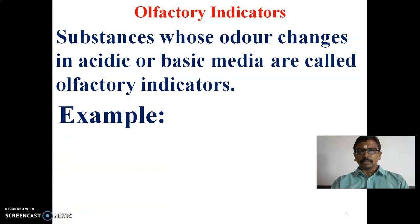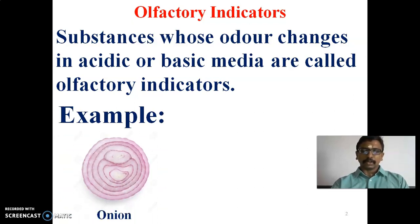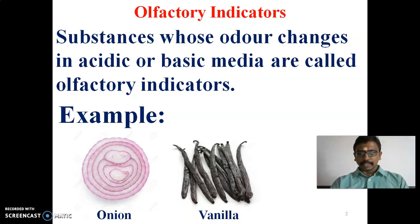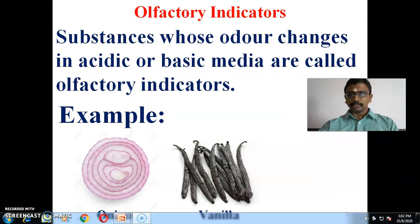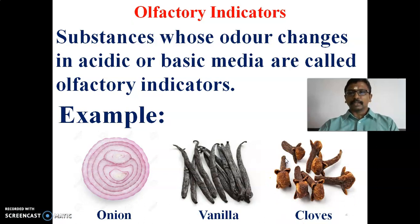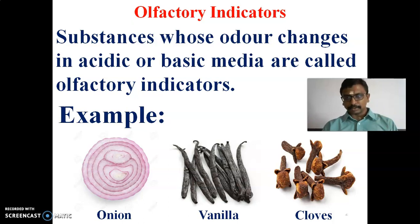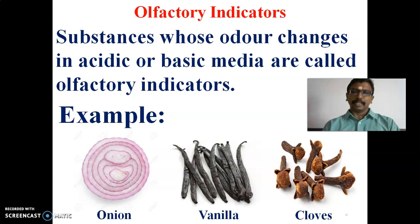For example, there are some olfactory indicators. The first one is onion, the second indicator is vanilla, and the third indicator is clove. These are all olfactory indicators. Olfactory indicators means a substance whose odour — the smell — changes in acidic or basic media.